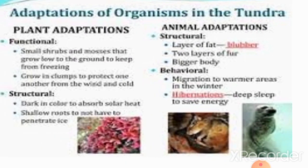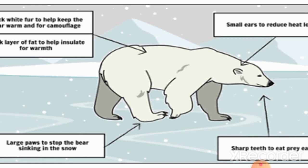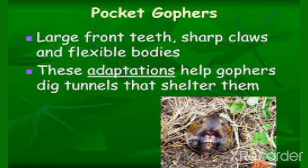For plants in the tundra, they are usually shrubs and mosses that grow very close to the ground to keep them from freezing. Animals such as the polar bear are able to survive in the cold tundra region by having white fur to keep them warm. The pocket gopher has large front teeth and sharp claws that help to protect them.